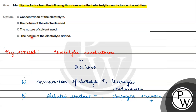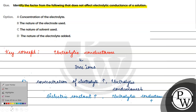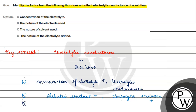The nature of the electrolyte also affects conductance. If an electrolyte is completely ionizing and dissociating, then the electrolytic conductance value will be high. But if an electrolyte does not easily dissociate, then the electrolytic conductance value will be low. So conductance depends on the nature of the electrolyte, the nature of the solvent, and the concentration of the electrolyte.